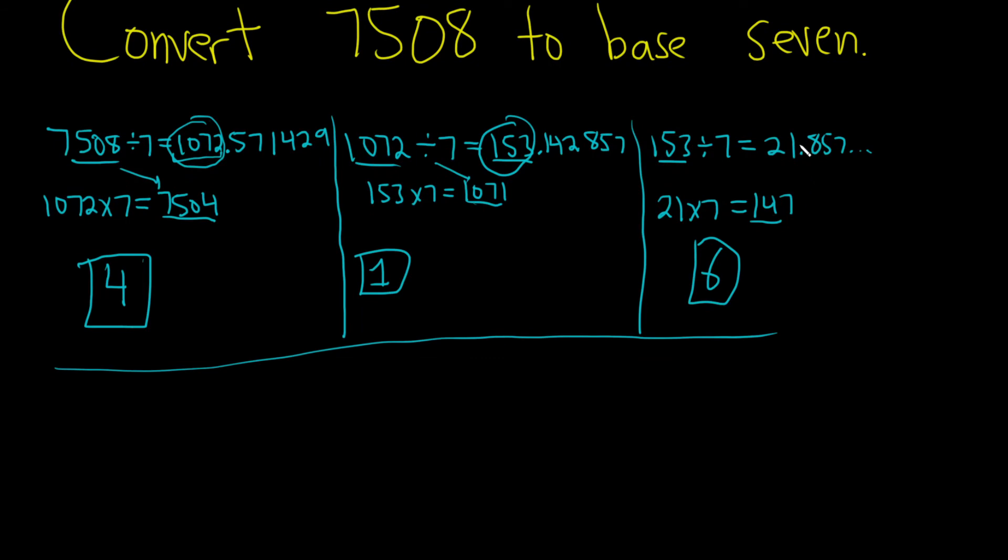So now we take 21 and divide that by 7. So 21 divided by 7 is equal to 3. And then you do 3 times 7, which is 21. You subtract. What's the remainder? The remainder is 0. Then you do it again.